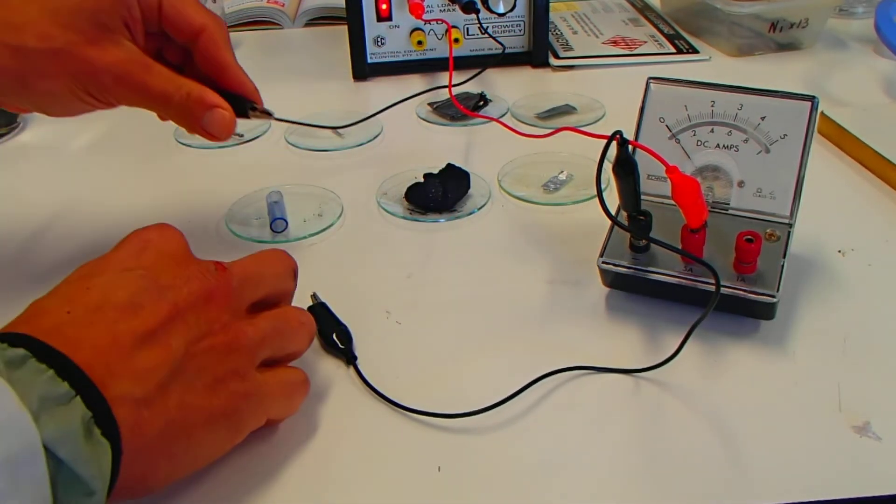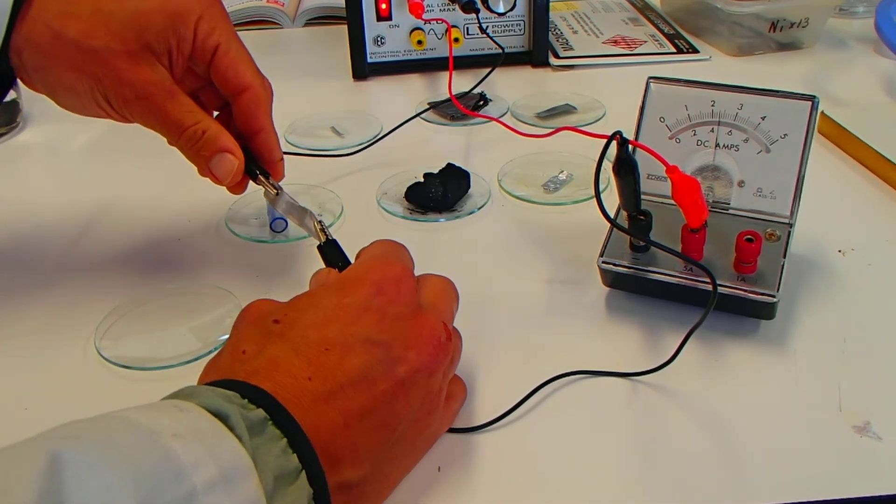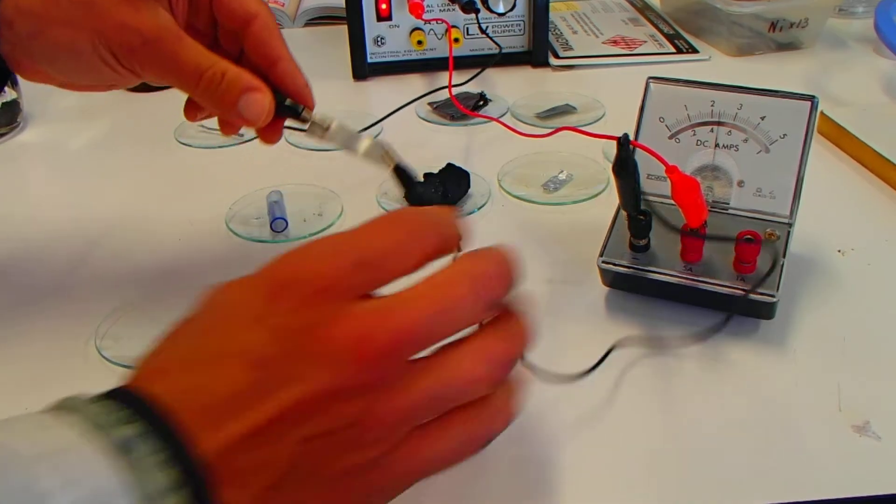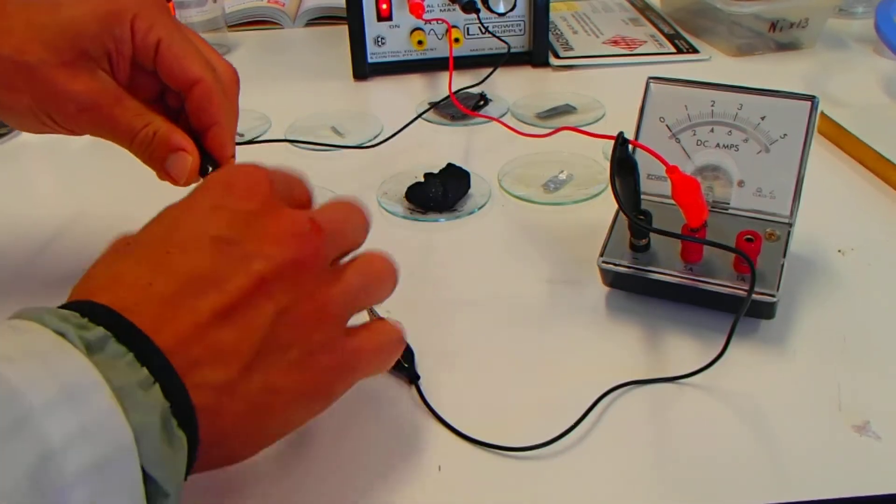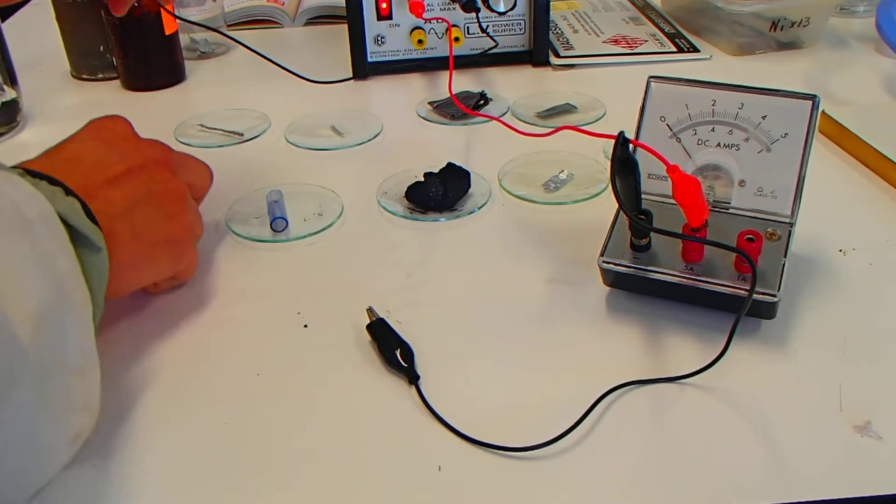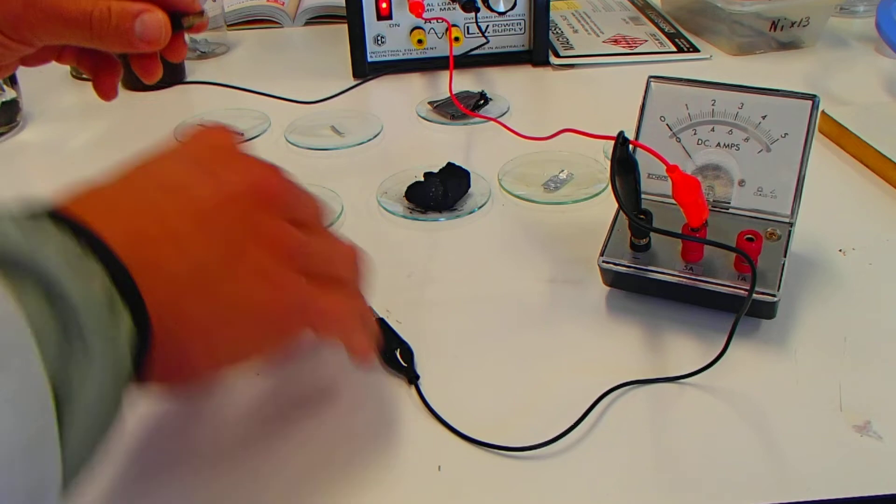Here we go for the tin sample. Put one on there. Put one on there. And yes, we have some current again for the tin. A bit of a relationship perhaps between the appearance and the malleability, that's the bendability, and its ability to carry current.